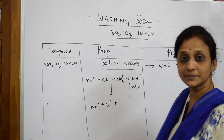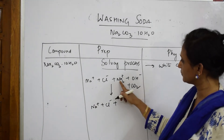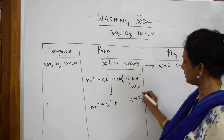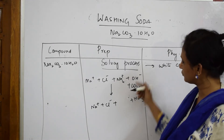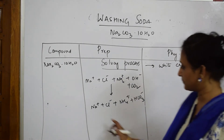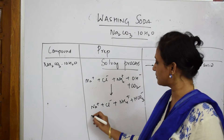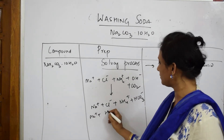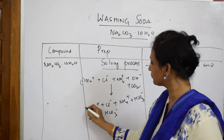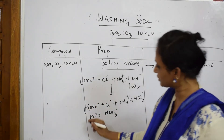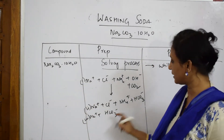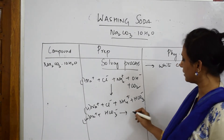So we have Na⁺, Cl⁻, HCO₃⁻, and NH₄⁺ in the reaction. In step 2, Na⁺ combines with HCO₃⁻. In step 3, when the sodium cation combines with the bicarbonate ion, it forms sodium bicarbonate (NaHCO₃).